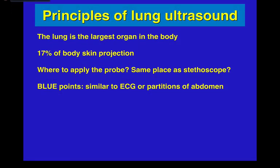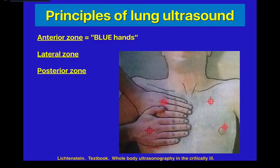A few principles of lung ultrasound: the lung is the largest organ in the body if you look at the skin projection — it's 17%. You might ask where do you apply the probe. There are earlier articles describing something called blue points, similar to EKG lead placement or partitioning of the abdomen, which essentially partitions the chest into different areas. Typically, lung ultrasound is broken down into anterior, lateral, and posterior zones.